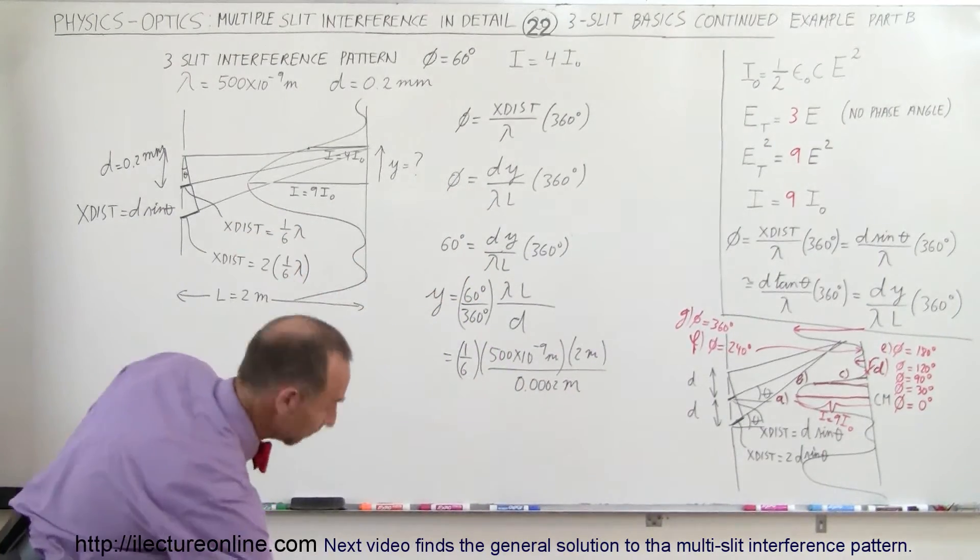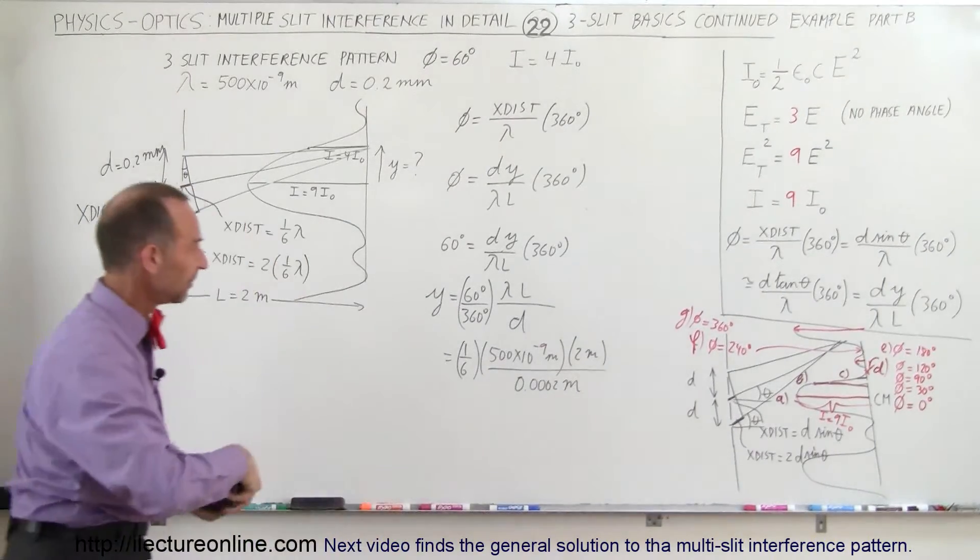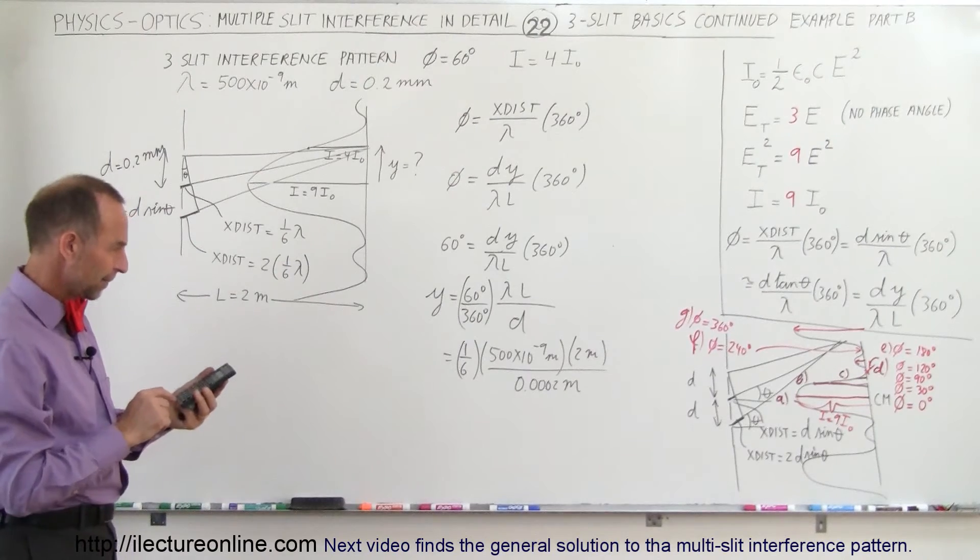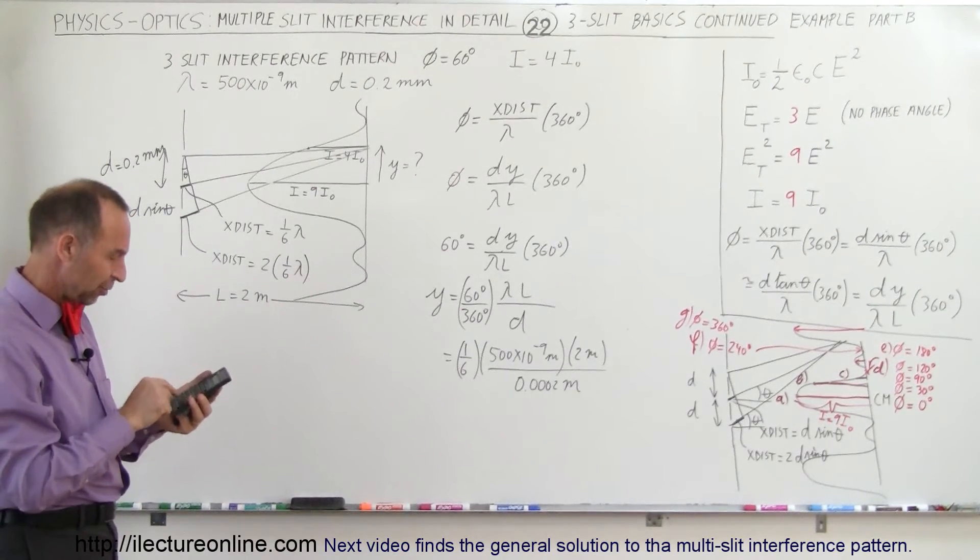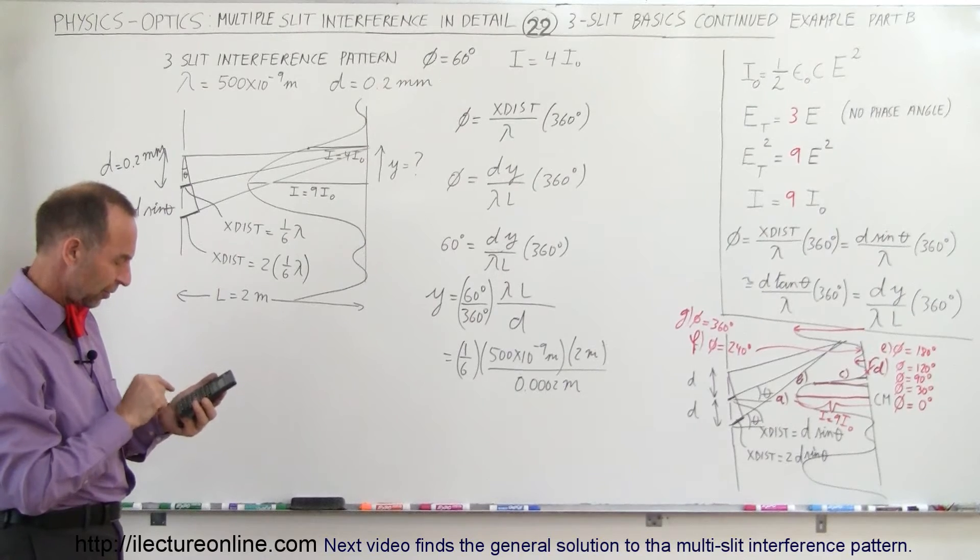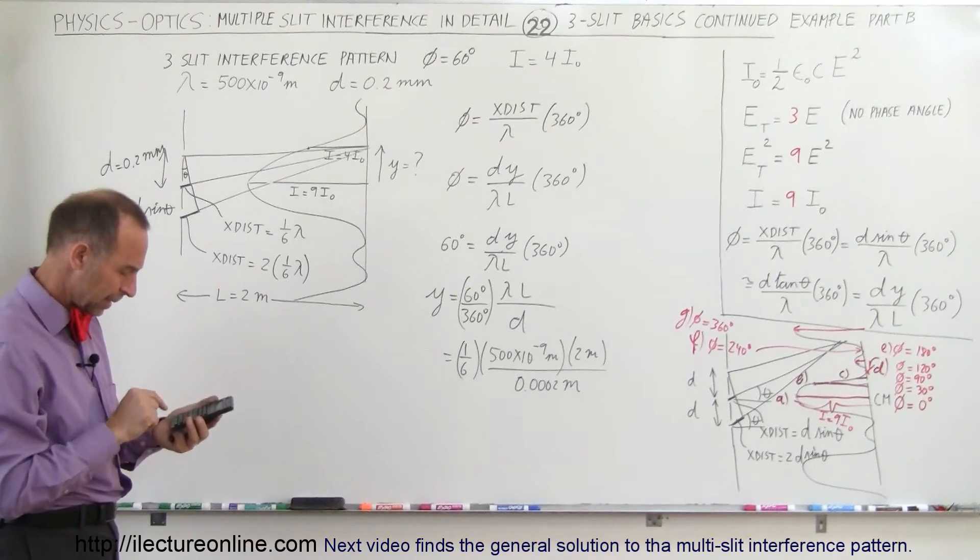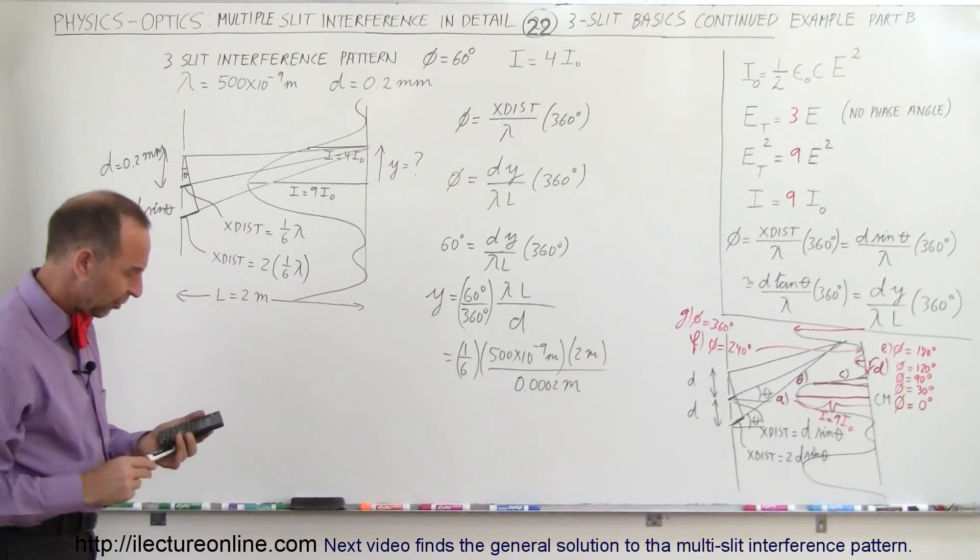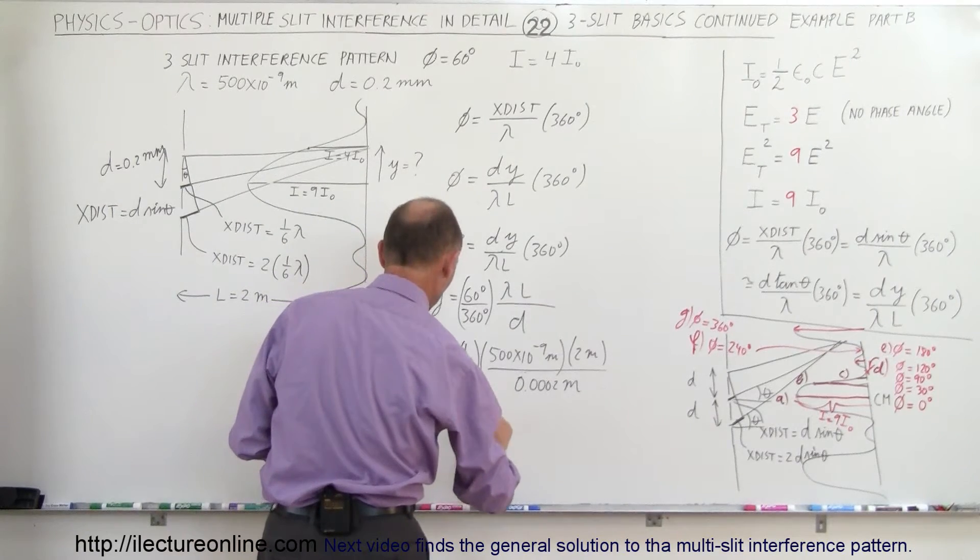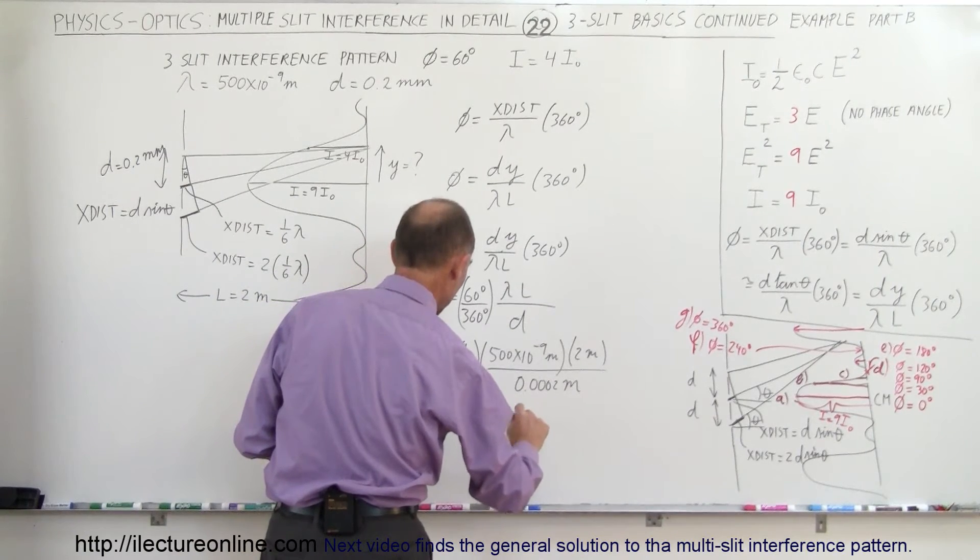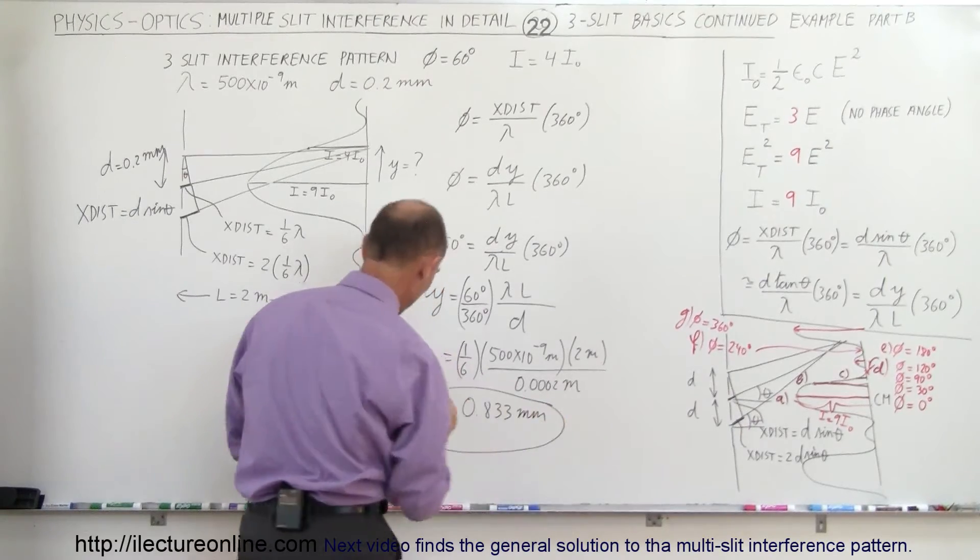Now let's see what we get. So we got 500 e to the minus 9 times 2 divided by 0.0002 and divide by 6 equals, and we get 0.833 millimeters.